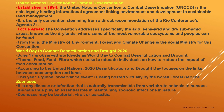June 17 is observed worldwide as World Day to Combat Desertification and Drought. The 2020 theme — Food, Fiber, Fuel — seeks to educate individuals on how to reduce the impact of food consumption. The UN's 2020 desertification observance focuses on the link between consumption and land, hosted virtually by the Korea Forest Service. Zoonosis is any disease or infection that is naturally transmissible from vertebrate animals to humans; it may be bacterial, viral or parasitic.